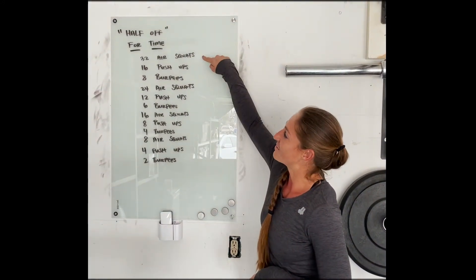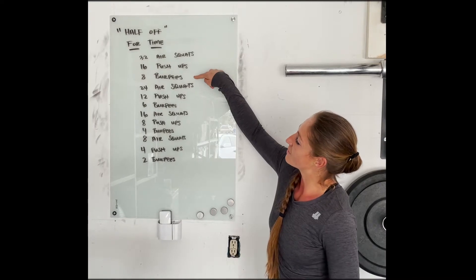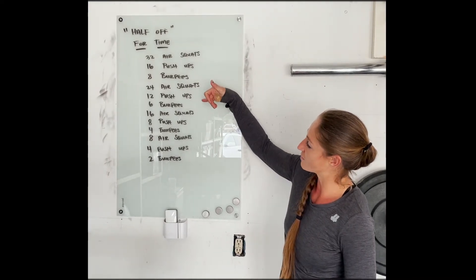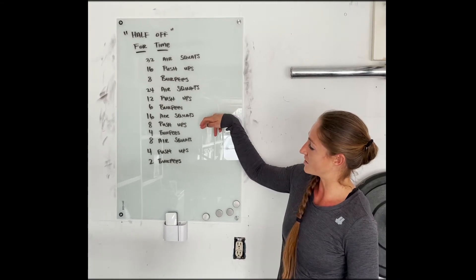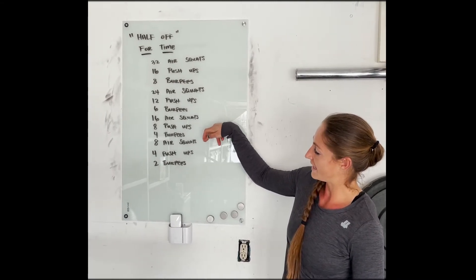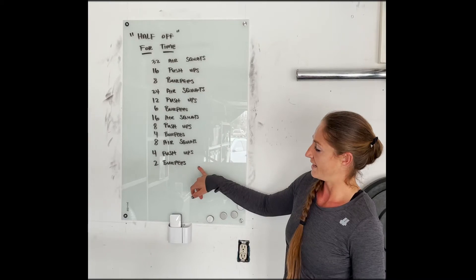So, 32 air squats, 16 push-ups, 8 burpees, and 24 air squats, 12 push-ups, 6 burpees, and 16 air squats, 8 push-ups, 4 burpees, 8 air squats, 4 push-ups, and 2 burpees.